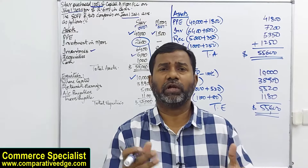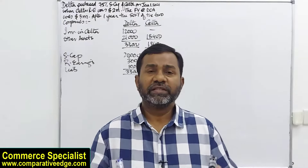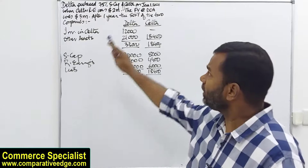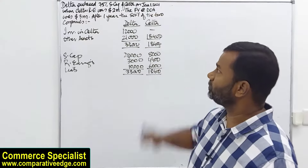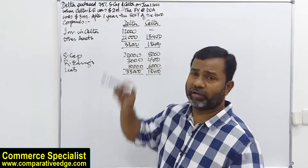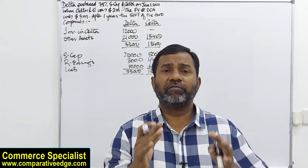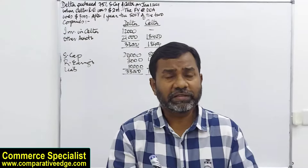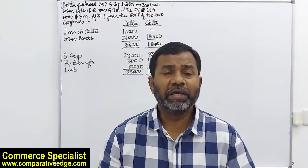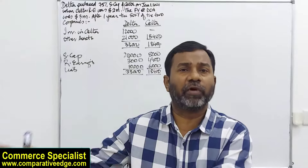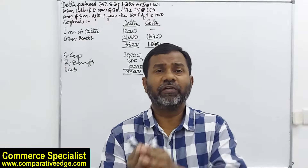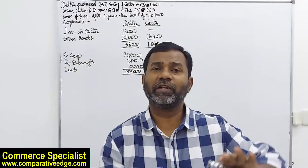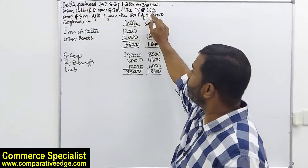In scenario two, the investment is 75 percent. Delta company is purchasing 75 percent share capital of Celta on January 1st, when Celta's retained earnings were 2 million. At the date of acquisition, the subsidiary already had a retained earnings balance of 2 million — this is known as pre-acquisition retained earnings. Any profit earned after acquisition is known as post-acquisition, and in post-acquisition, the parent will have a 75 percent share and the remaining 25 percent belongs to the non-controlling interest.